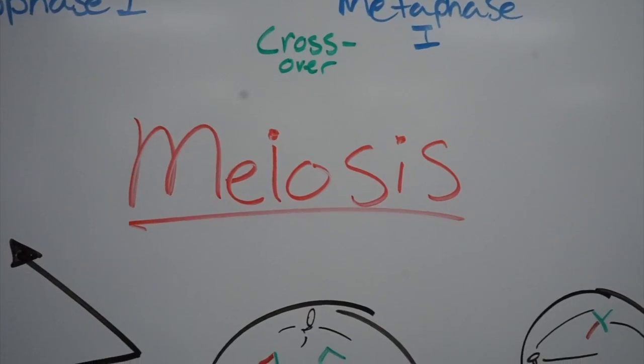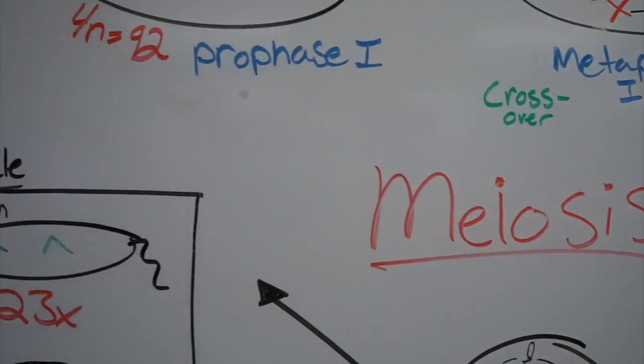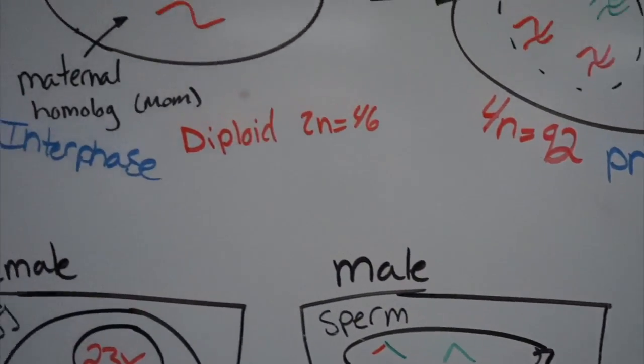Okay, here's a brief introduction to meiosis. Let's take a normal parent cell that is diploid with 46 chromosomes.